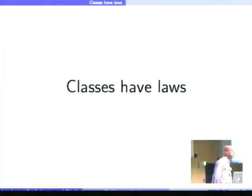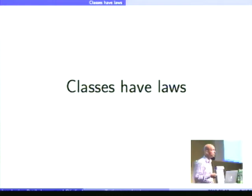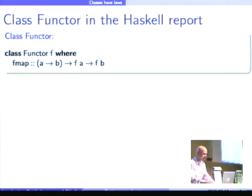So the first observation is that classes have laws. Classes combine a number of methods into a single unit, and the reason they're combined in this unit is because they satisfy some properties. And that's obvious when you look at the Haskell report. You know all of this at first.